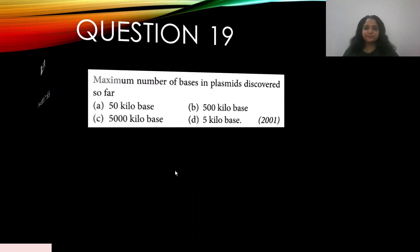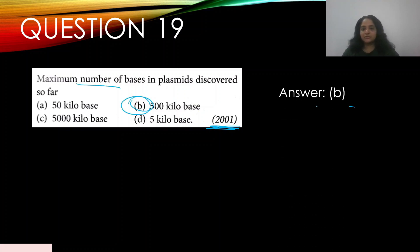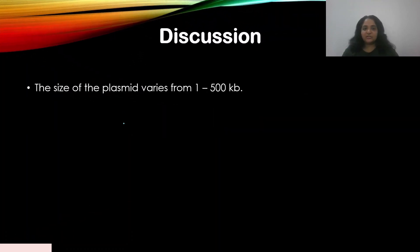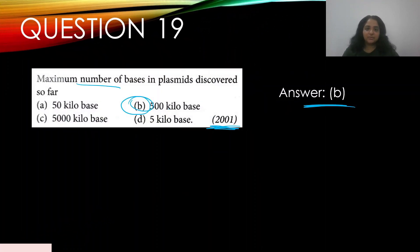Question 19: Maximum number of bases in a plasmid discovered so far — this appeared in 2001. Options: A — 50 kilobase, B — 500 kilobase, C — 5000 kilobase, D — 5 kilobase. The answer is B — 500 kilobase. The size of plasmids can vary from 1 to 500 kilobase, and the maximum discovered so far is around 500 kilobases.